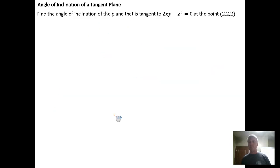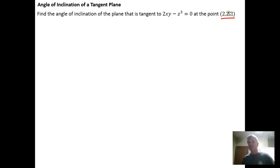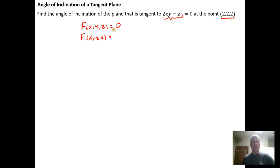Find the angle of inclination of the plane tangent to 2xy minus z cubed equals 0 at the point (2, 2, 2). We want to know the inclination the tangent plane at this point makes. We don't even need the equation of the tangent plane because the gradient vector is perpendicular to it — we're really looking for what angle the gradient vector makes with the z-axis. So we need a function f(x, y, z) = 0; our function is f(x, y, z) = 2xy minus z cubed.